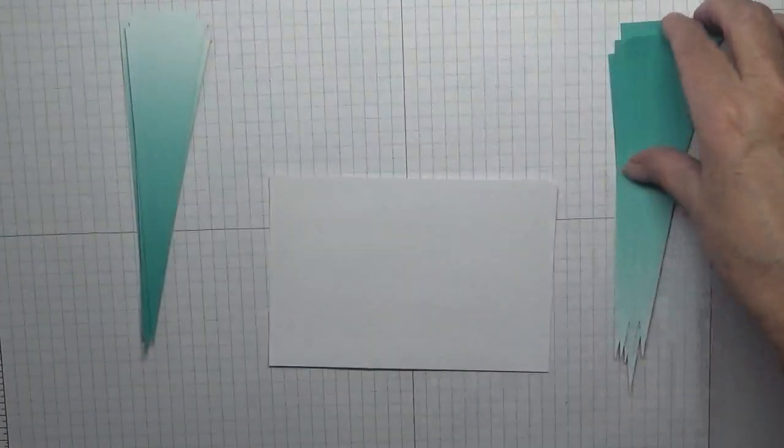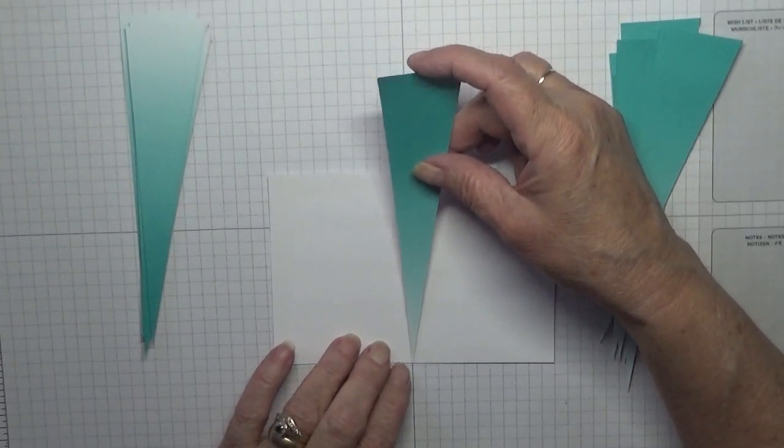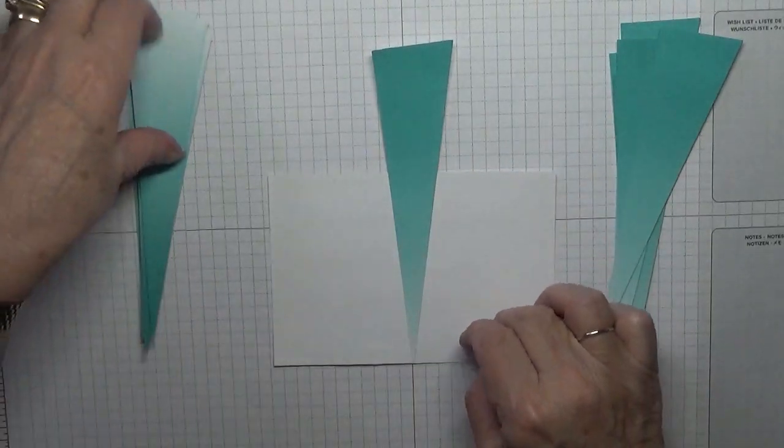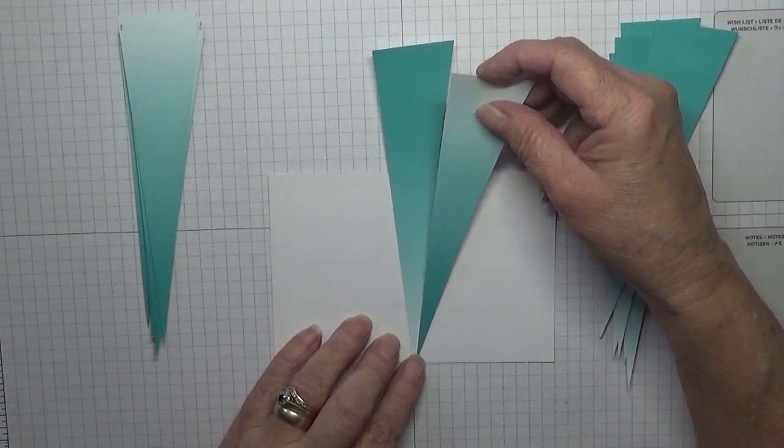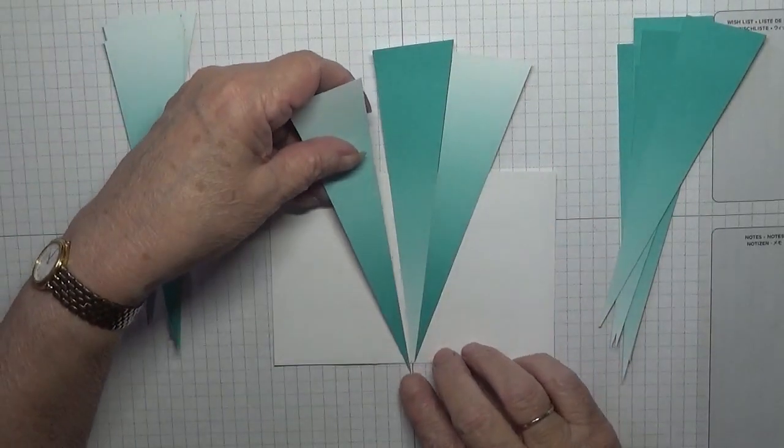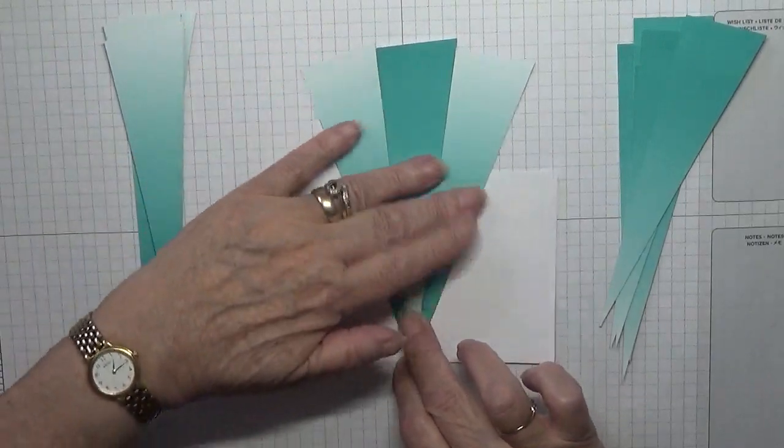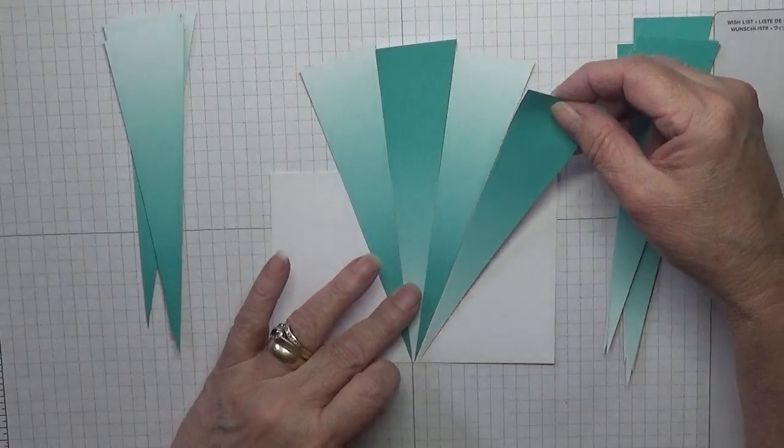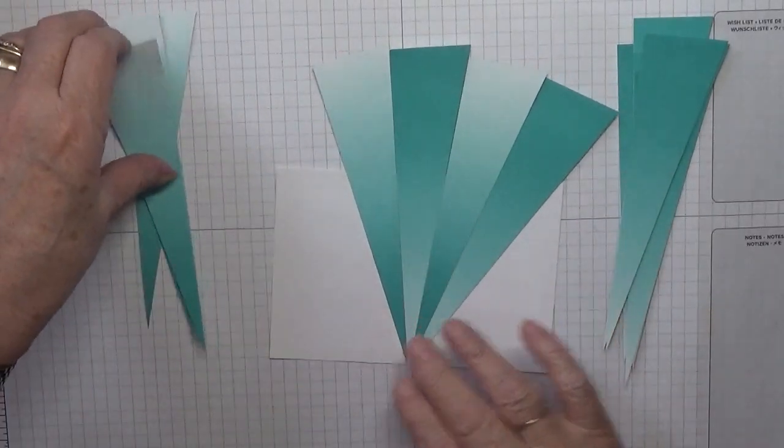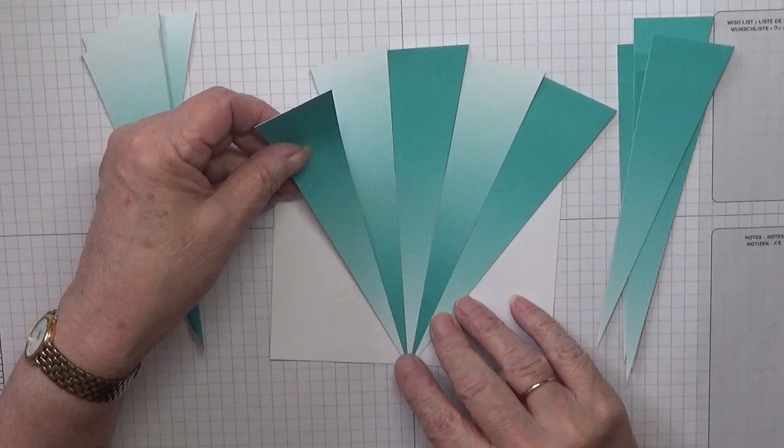And we're going to start with a dark one. Put the point right to the bottom of the card and place that there. Then we get a light one, do the same, put the point to the bottom of the card. Now a dark one, right to the bottom.